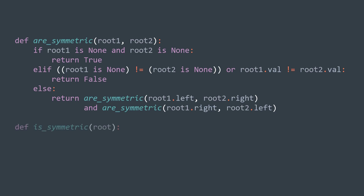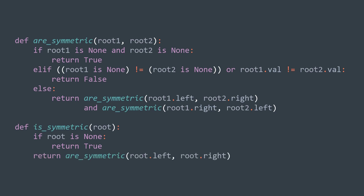In our main solution function is_symmetric, we first check that the input tree exists — because if it doesn't, we can directly return true, as an empty tree is symmetric. Otherwise, we check that its subtrees are symmetric to each other using the helper function: we return is_symmetric(root.left, root.right). That's it.